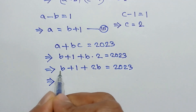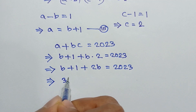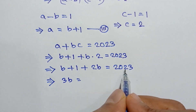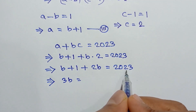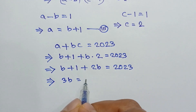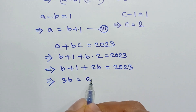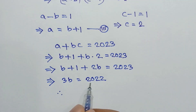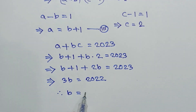So b plus two b equals three b equals 2023 minus one equals 2022. Dividing both sides by three, we get b equals 674.